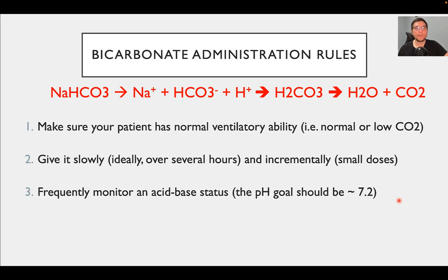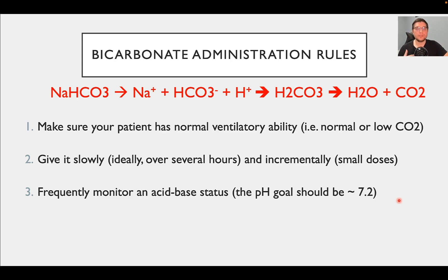Rule number three: frequently monitor acid-base status during bicarbonate therapy, and your pH goal should be about 7.2. You don't want to normalize pH back to 7.4, because in many of these cases you will overshoot and the patient will develop metabolic alkalosis, which may cause a lot of problems. Do the minimum necessary to return pH to 7.2, but not to a completely normal value.